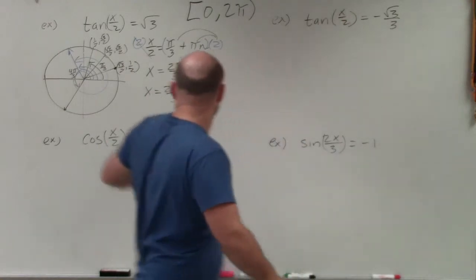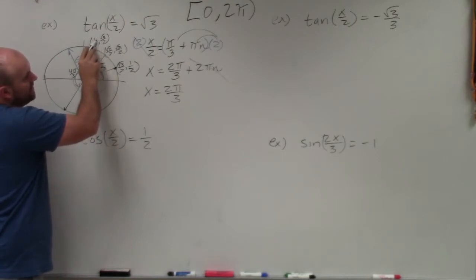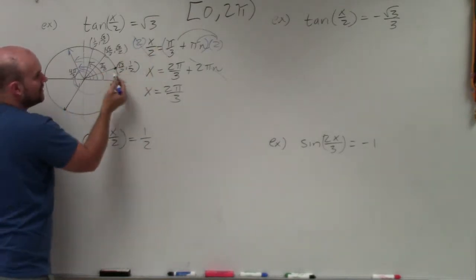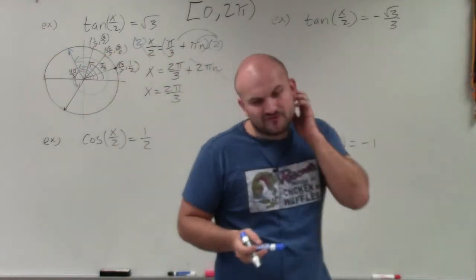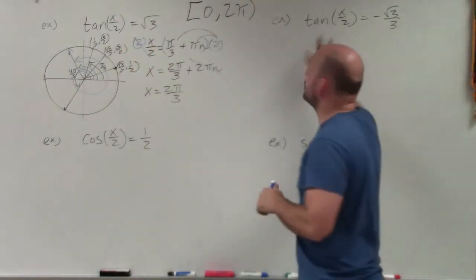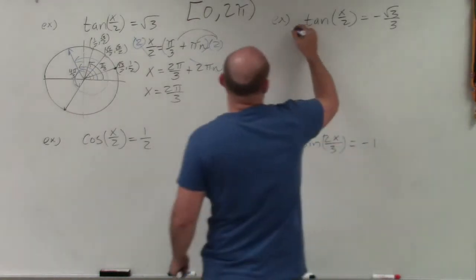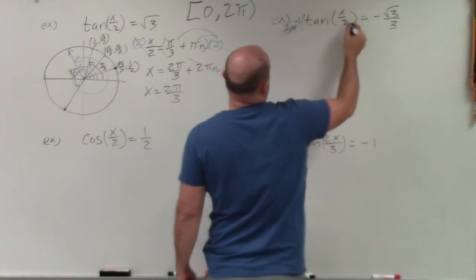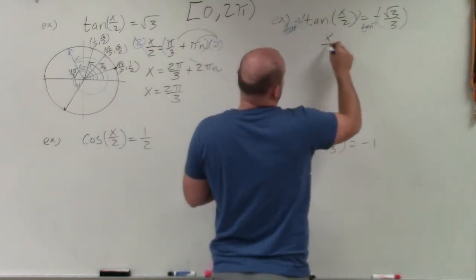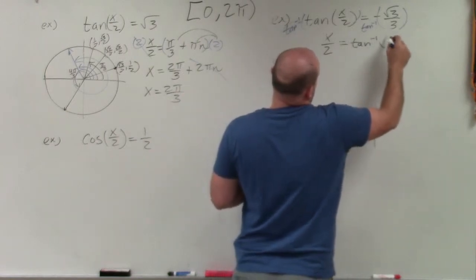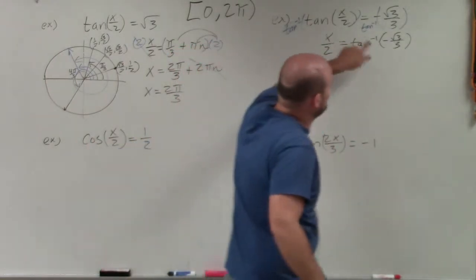Now let's solve tan(x/2) = -√3/3. Going back to the unit circle, if you do y/x at the point (√3/2, 1/2), you get √3/3. This particular value produces √3/3 — but we need the negative version. Tangent is negative in the second and fourth quadrants. Taking the inverse tangent on both sides, x/2 = tan⁻¹(-√3/3), asking which angle produces tangent equal to negative √3/3.